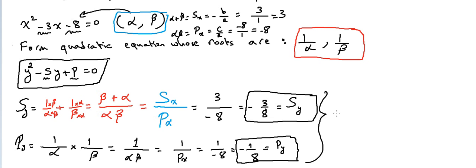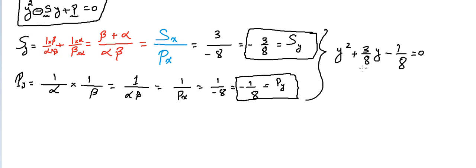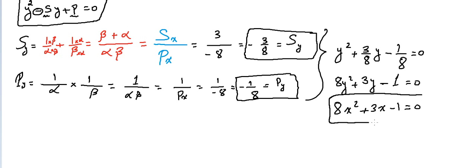Now we can form the equation. It is y²−(Sum_y)·y+(Product_y)=0, which gives y²−(−3/8)y+(−1/8)=0, or y²+(3/8)y−(1/8)=0. Multiplying the whole equation by 8 to clear fractions: 8y²+3y−1=0. Writing in x: 8x²+3x−1=0. This is how we form a new quadratic equation using the sum and product of the original equation.